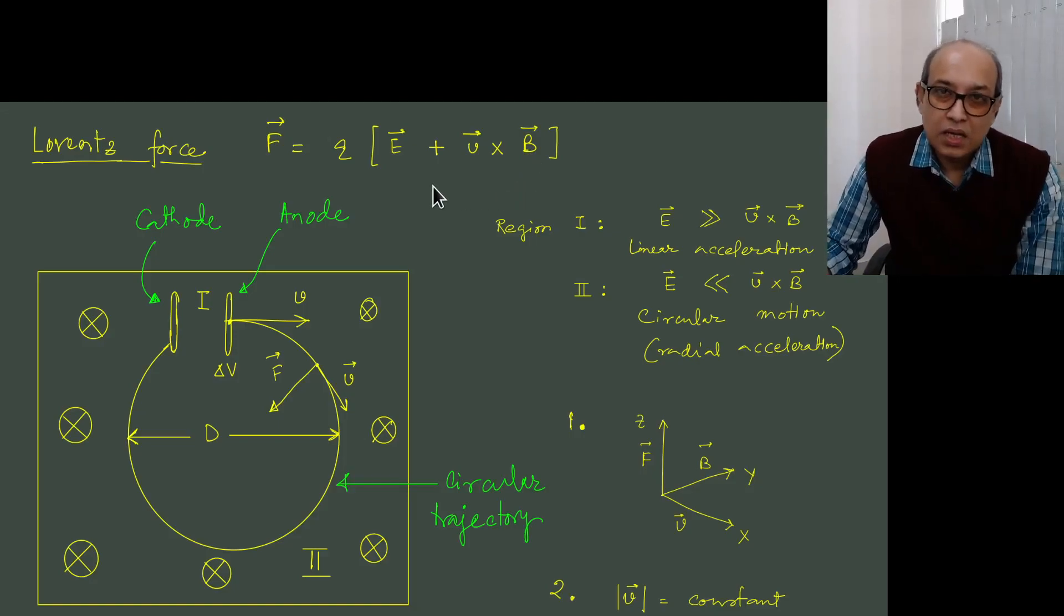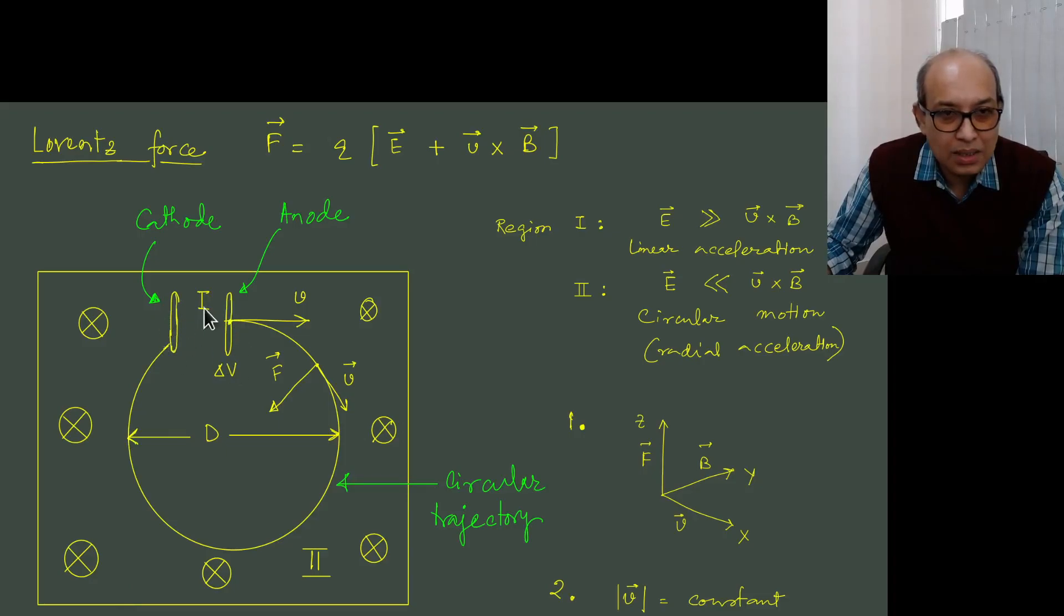Now we actually use a particular setup to determine the charge to mass ratio which uses this Lorentz force. So what we do is the following. Let us suppose we have some region in space where we have two parallel electrodes. Let us say we have a cathode and an anode.